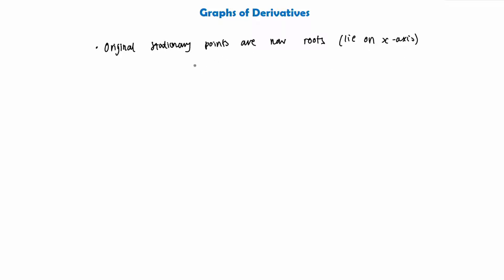So all stationary points on a curve — let's say we had a curve with a stationary point up here — instead of this being a stationary point in our graph, it's now going to be a root on the graph of the derivative. So it's going to lie on the x-axis.